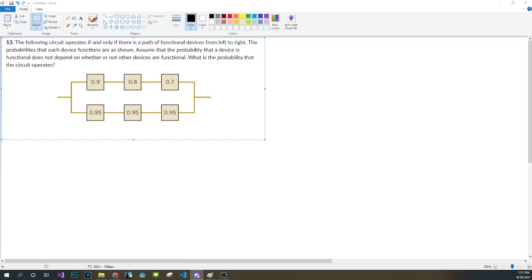All right, hello. So today we're going to be tackling this problem. The following circuit operates if and only if there is a path of functional devices from left to right. The probabilities that each device functions are as shown. Assume that the probability that a device is functional does not depend on whether or not other devices are functional. What is the probability that the circuit operates?